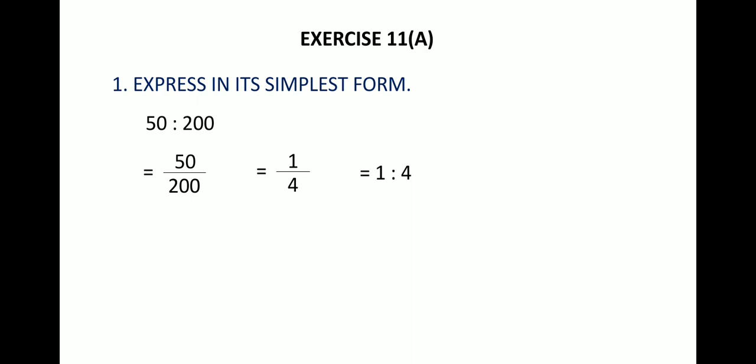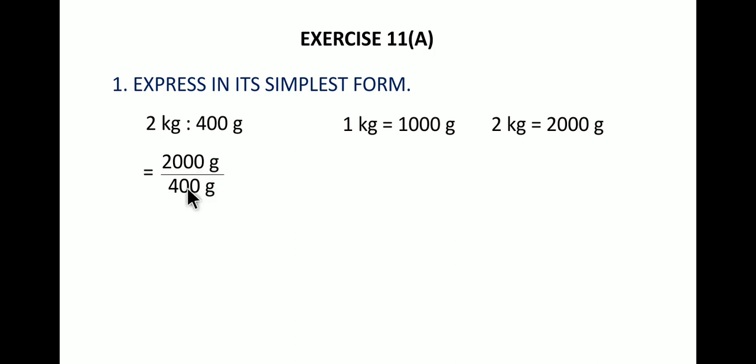Similarly, if there are different units like 2 kg and 400 grams, first we will convert both units into similar type of units. We have 1 kg = 1000 grams, so 2 kg = 2000 grams. In place of 2 kg we write 2000 grams, and 400 grams is written as is. So 2000 grams:400 grams. The grams are cancelled and two zeros can be cancelled from numerator and denominator, so we get 20/4.